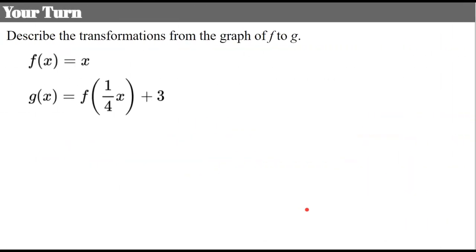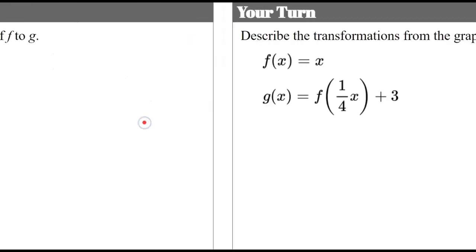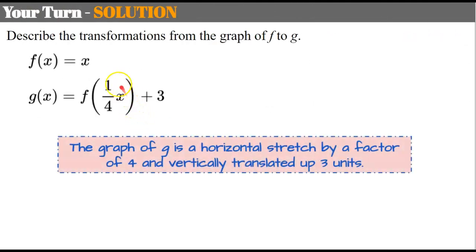Now it's your turn. I'm not going to ask you to graph it, but I'm going to ask you to describe it — pay attention to your order. Go ahead and pause now, write down your description, and come back to check your work. Welcome back. Inside the parentheses, we notice that the graph of g is a horizontal stretch by a factor of four — remember you need to find the reciprocal. And it has been vertically translated up three units. Since a was inside and positive, it's not a reflection, and there's no horizontal translation.